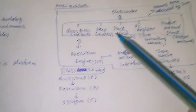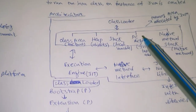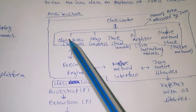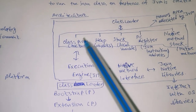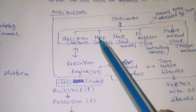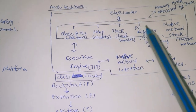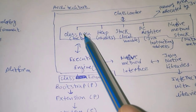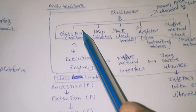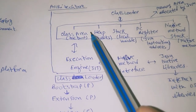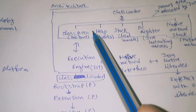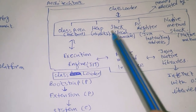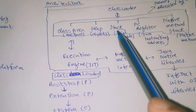Here is the memory area allocated by JVM. There are five types of memory area: class area, heap area, stack area, PC register, and native method stack. Inside the class area, the methods will be stored. Inside the heap area, the objects will be stored.